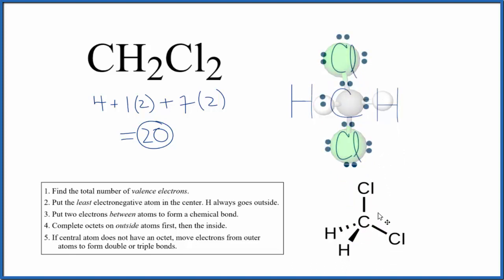This is Dr. B with the Lewis structure for CH2Cl2 dichloromethane and the molecular geometry, which is tetrahedral. Thanks for watching.